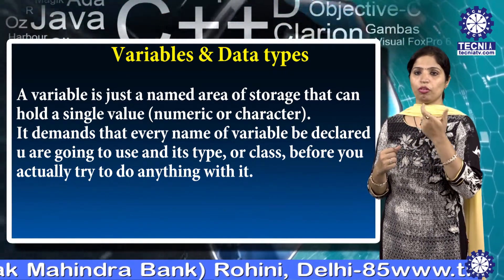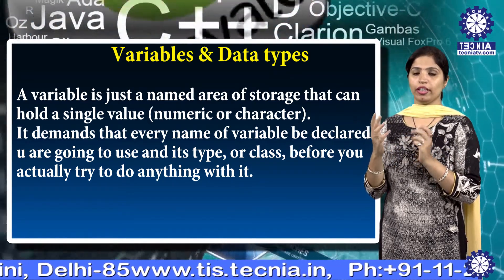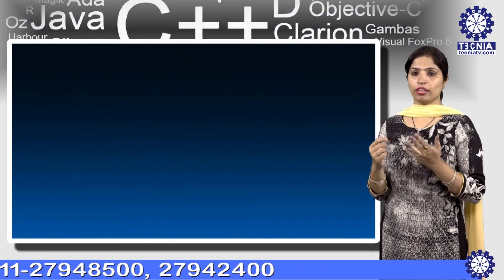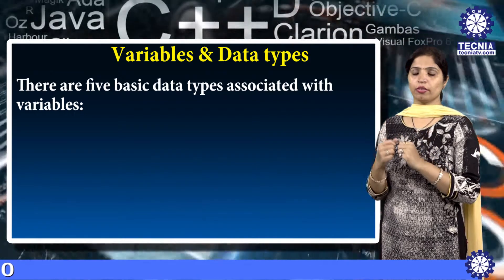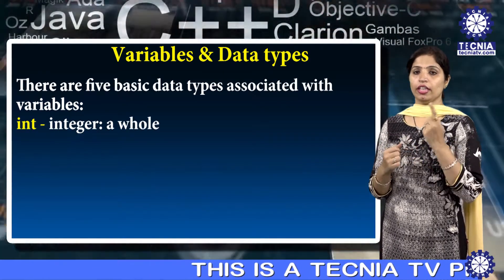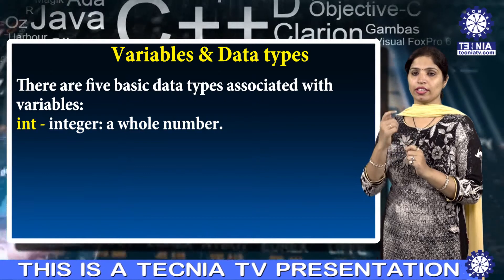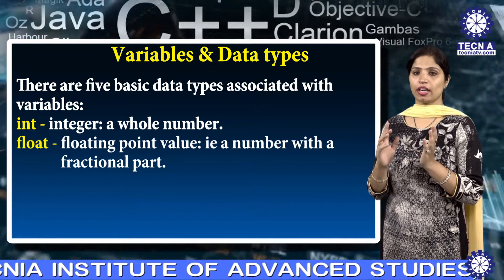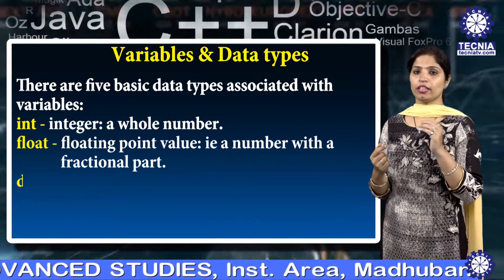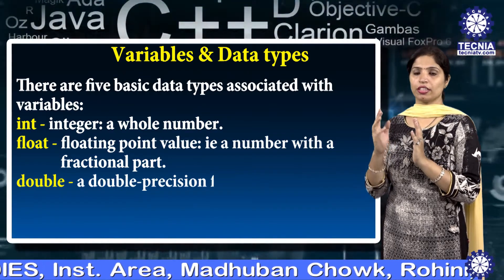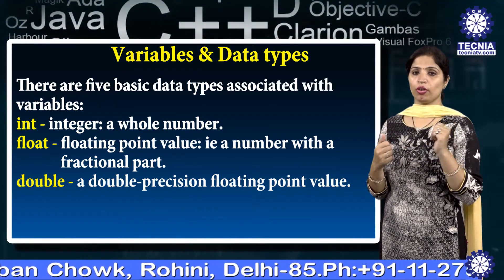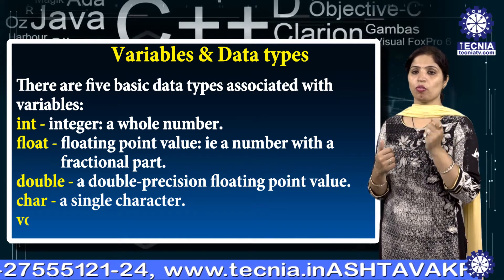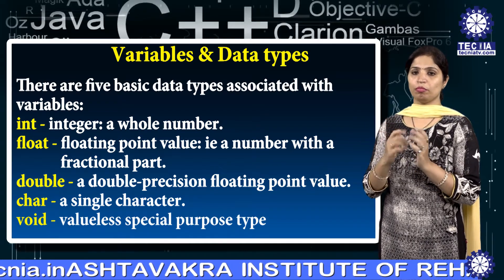Here, the type must be a valid data type plus any modifier, and v1, v2, v3 through vn are the variable names. There are five basic data types associated with variables: integer, which contains a whole number; float, a floating point value that is a number with a fractional part; double, a double precision floating point value; character, which contains a single character; and void, a special purpose type.